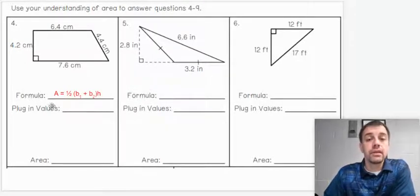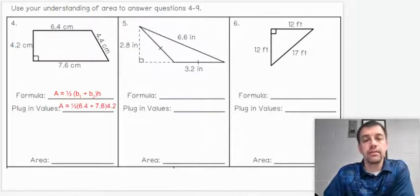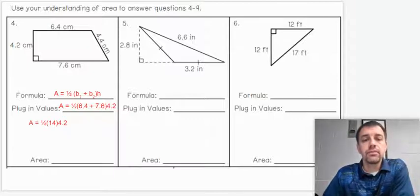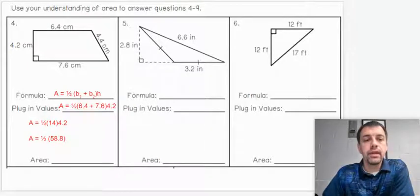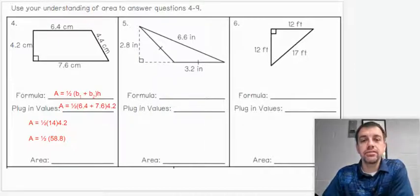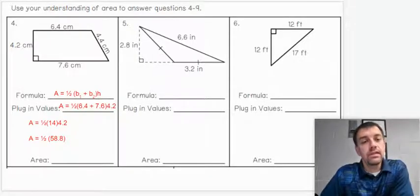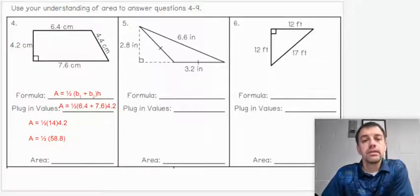So we'll use the same formula here. Make sure when you plug in these numbers that the values for the base 1 and base 2 are 6.4 and 7.6. Remember, the 4.2 is your height. We can easily get those mixed up if we're not paying attention. So let's go ahead and start to simplify. Add the numbers in the middle. So 6.4 plus 7.6 gives you 14, and if we multiply that by 2, we should get 58.8. And I'm not going to show it on the screen because I know some just watch this to get the answers to write it down on their papers. So if you're listening and paying attention, your area here is 29.4 centimeters squared.